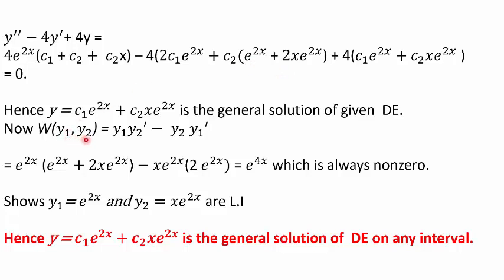Let's find the Wronskian. On substituting y1, y1', y2, y2', the Wronskian comes out to be e^(4x). Whatever value of x you take, the Wronskian will always be non-zero as it's an exponential function — even for x = 0 we get 1. So y1 and y2 are linearly independent for all values of x. Hence y = c1·e^(2x) + c2·x·e^(2x) is the general solution of the differential equation on any interval.